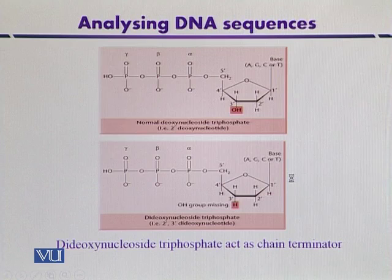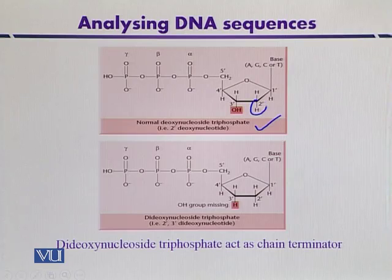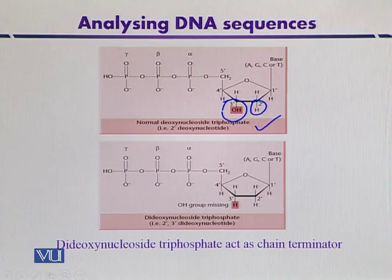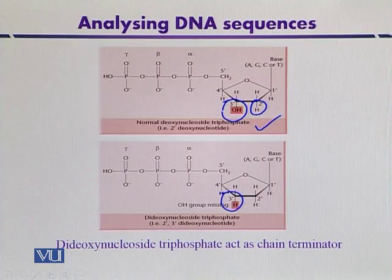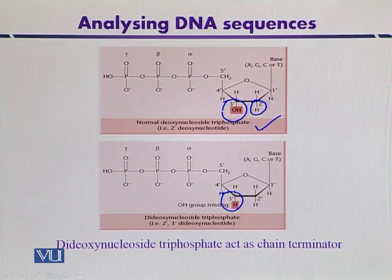Here is a comparison of normal deoxynucleoside triphosphate (2'-deoxynucleoside), where the OH group is not present at the 2' site, but the OH group is present at the 3' position. When compared with dideoxynucleoside triphosphate, it lacks the OH group at the 3' end. This missing 3' OH group means it cannot catalyze the addition of the next nucleotide in the growing chain.